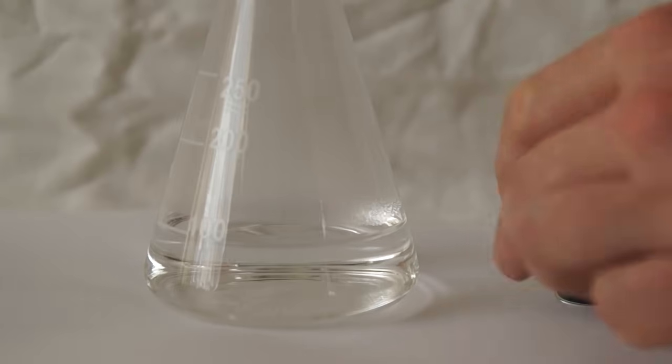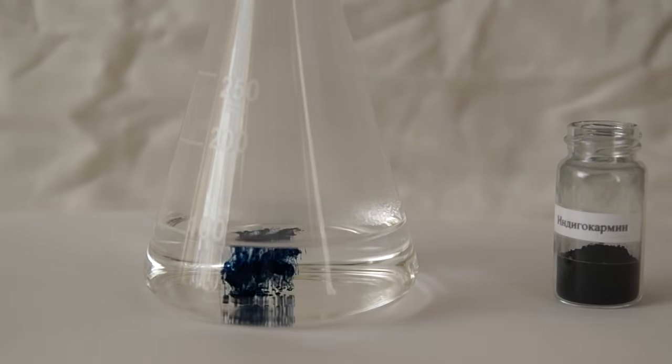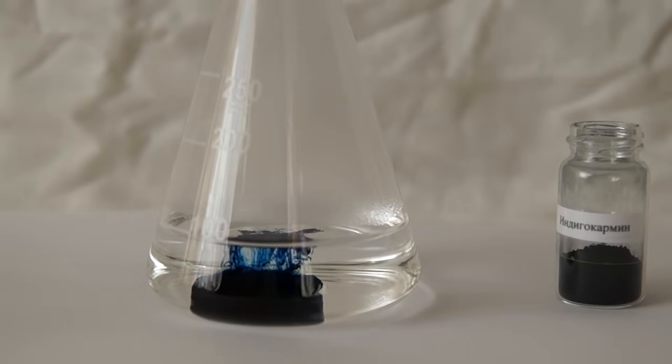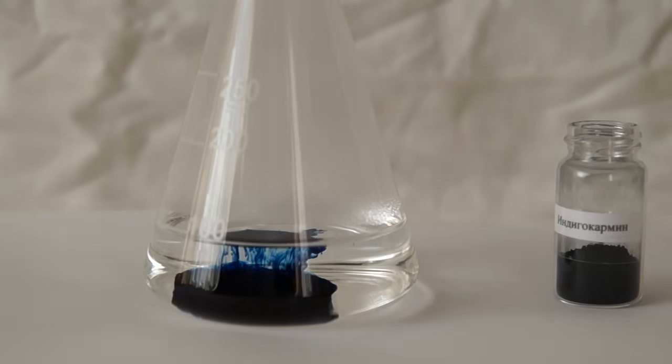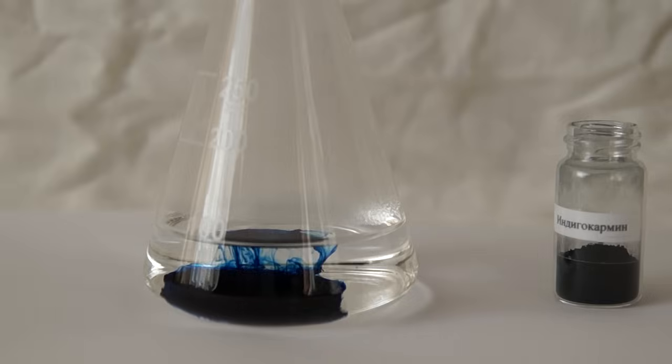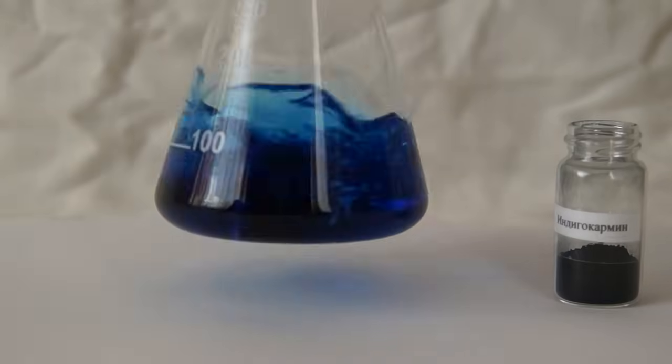To make the solution colorful, take a flask, fill it with hot water and pour there a small bit of soluble indicator called indigo carmine. The solution now becomes deep blue.